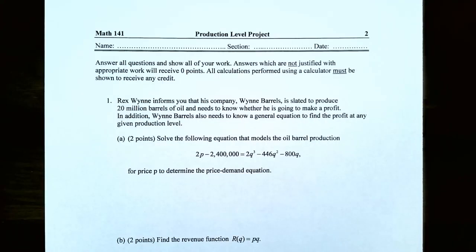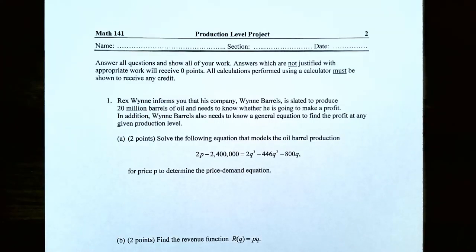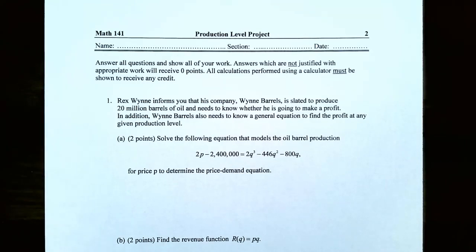This production level project is structured similarly to the last project. There's a series of questions from the company's owner that need to be addressed, broken down into problems and parts. Question one asks: Rex Wayne's company, Wayne Barrels, is slated to produce 20 million barrels of oil and needs to know whether they're going to make a profit, and also needs a general equation to find profit at any production level.